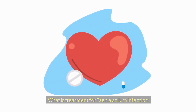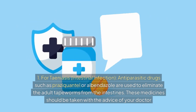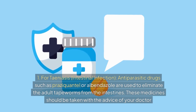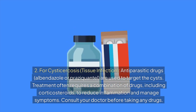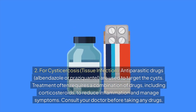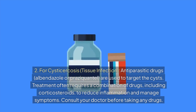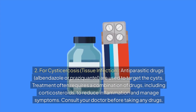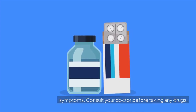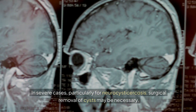For treatment: 1. For taeniasis (intestinal infection), antiparasitic drugs such as praziquantel or albendazole are used to eliminate the adult tapeworms from the intestines. These medicines should be taken with the advice of your doctor. 2. For cysticercosis (tissue infection), antiparasitic drugs — albendazole or praziquantel — are used to target the cysts. Treatment often requires a combination of drugs, including corticosteroids, to reduce inflammation and manage symptoms. Consult your doctor before taking any drugs. In severe cases, particularly for neurocysticercosis, surgical removal of cysts may be necessary.